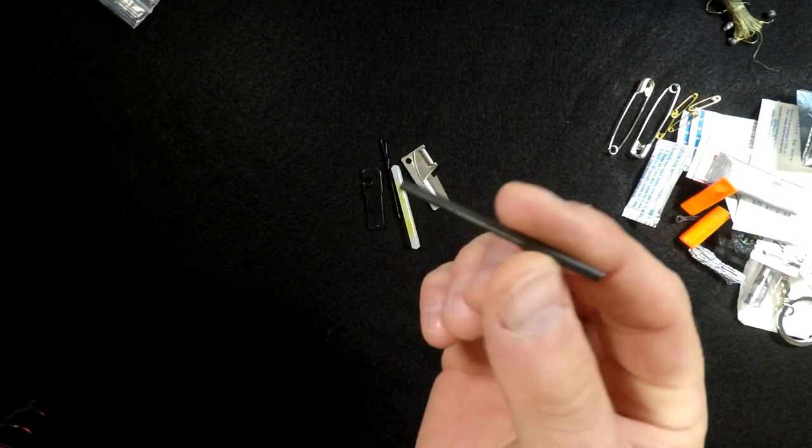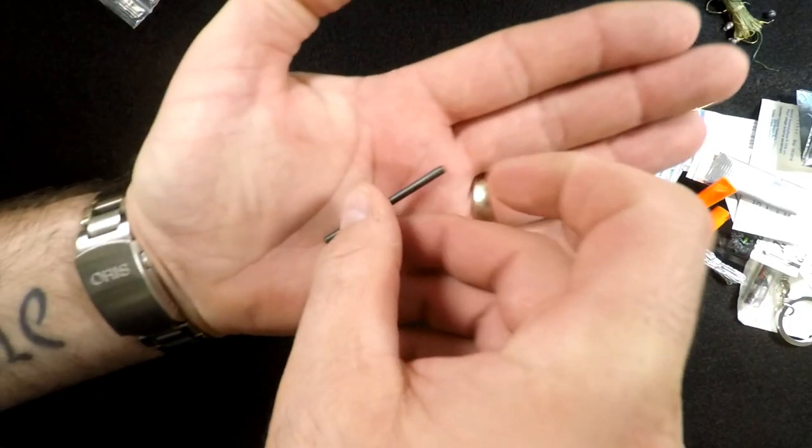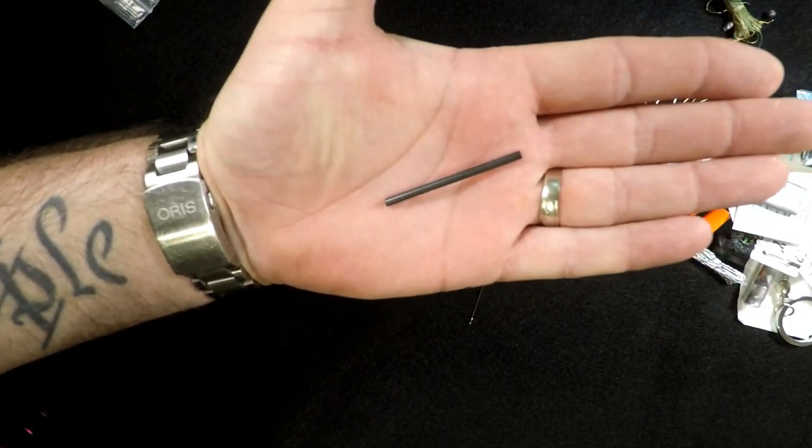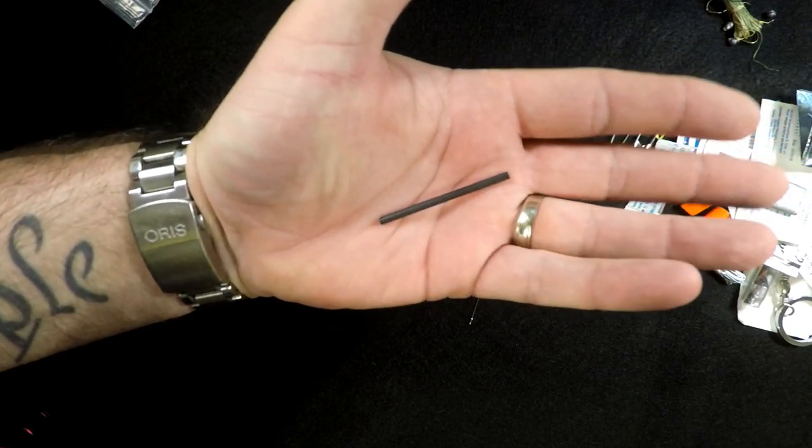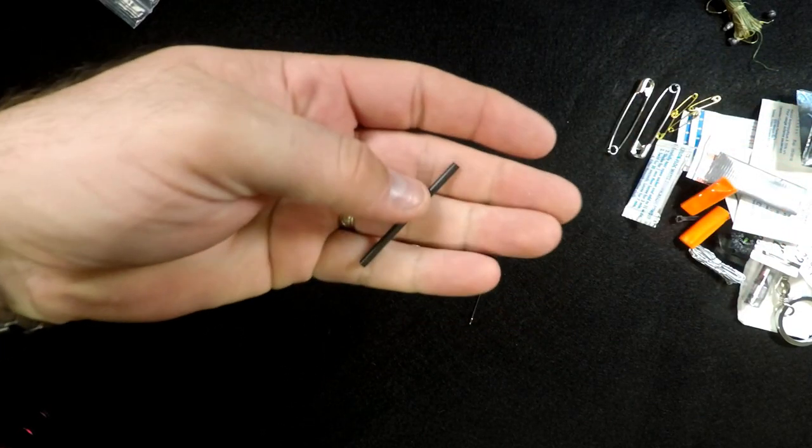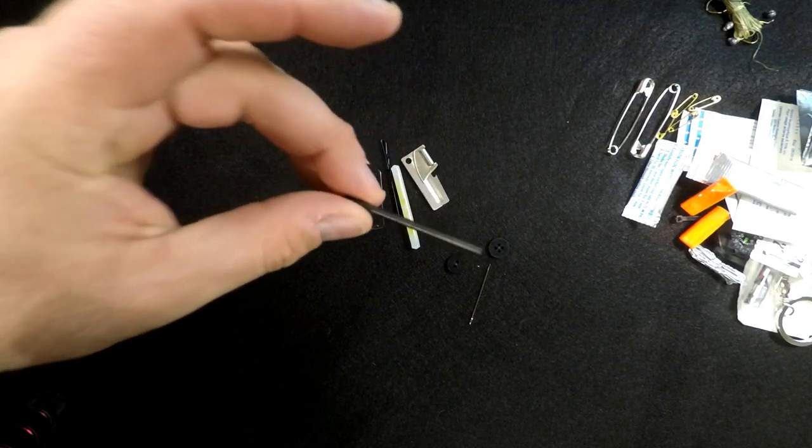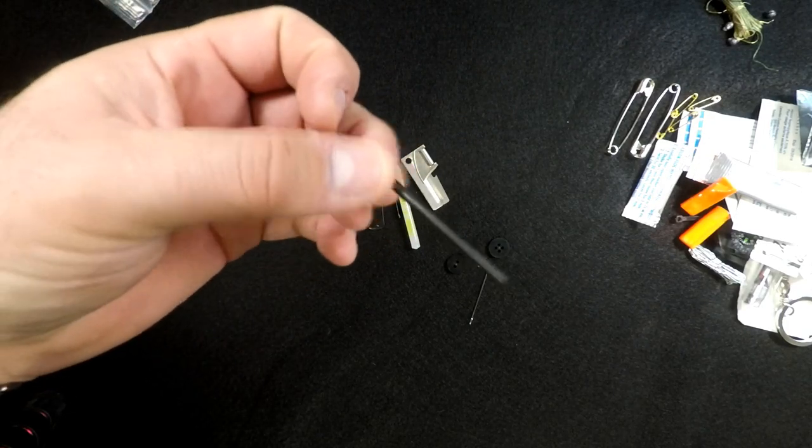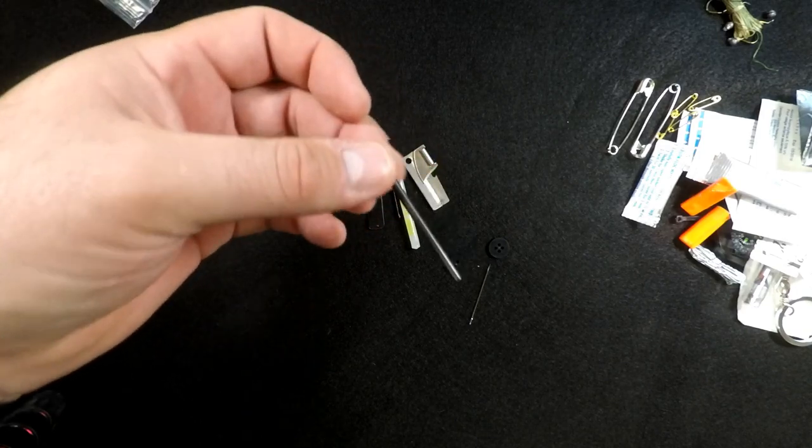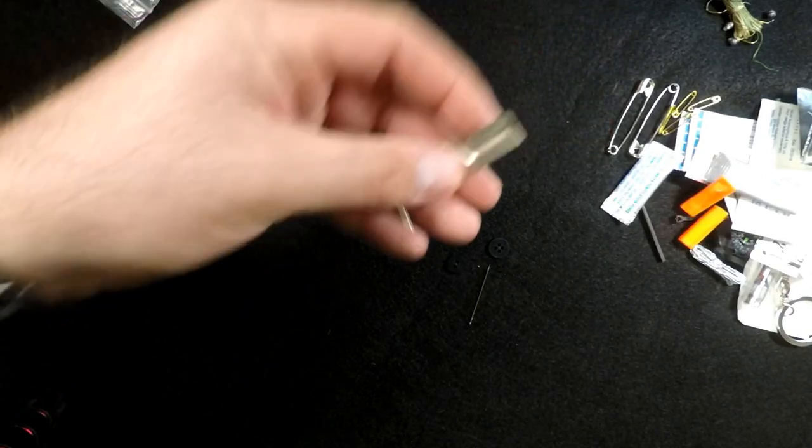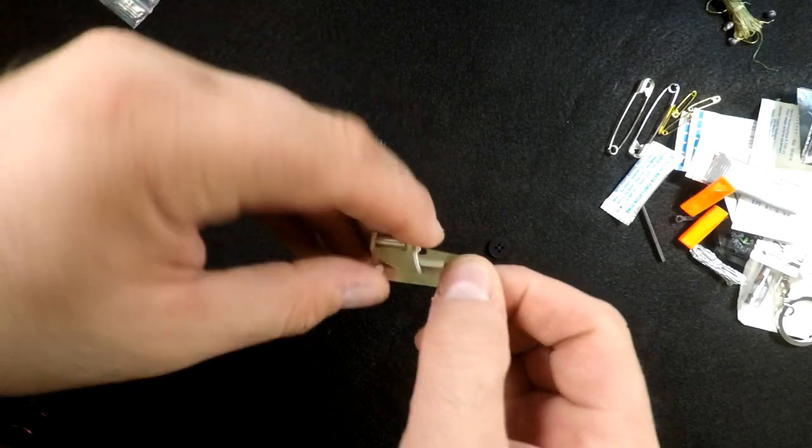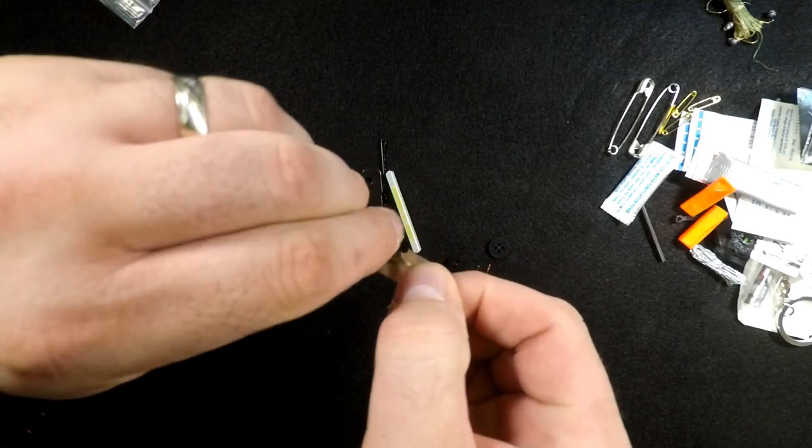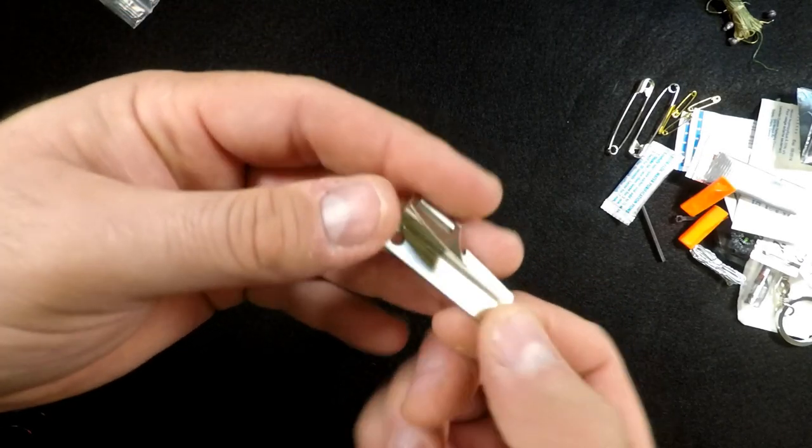Little ferrocerium rod. Now the ferrocerium rod is small, so you're not going to get a lot of use out of it and it may break fairly easily, so you'd have to be careful with it, but it is in there. So you'll need that to start your fires. We'll get to what you strike that with here in a minute. P38 can opener standard, like you would find in your old MREs and whatnot. Use it to open cans if you have them.